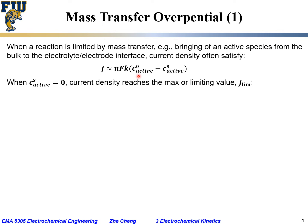Assuming both concentrations are positive and greater than zero: when the surface concentration Cs reaches zero, the current density will reach its maximum, or limiting current density, j_lim. Since n, F, and k are all constants, and the bulk concentration C₀ is also constant for a given electrochemical system, the current density depends on the surface concentration. When Cs equals zero, the second term vanishes and j_lim = nFk·C₀.